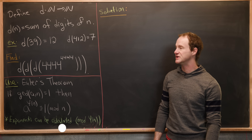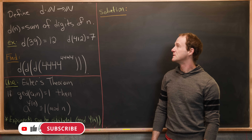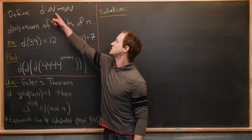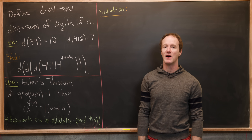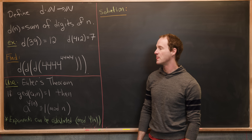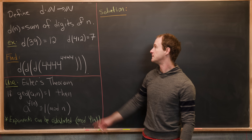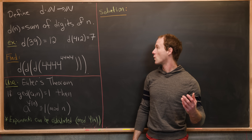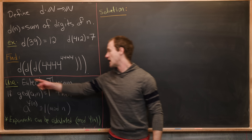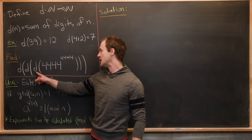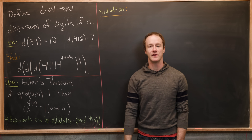Here we're going to look at a nice problem involving the digit sum. Let's recall what the digit sum is. We define a function d from the natural numbers to the natural numbers such that d(n) is equal to the sum of the digits of n. For example, d(39) = 3 + 9 = 12, and d(412) = 4 + 1 + 2 = 7. Our goal is to find d of d of d of 4,444 to the 4,444 power.